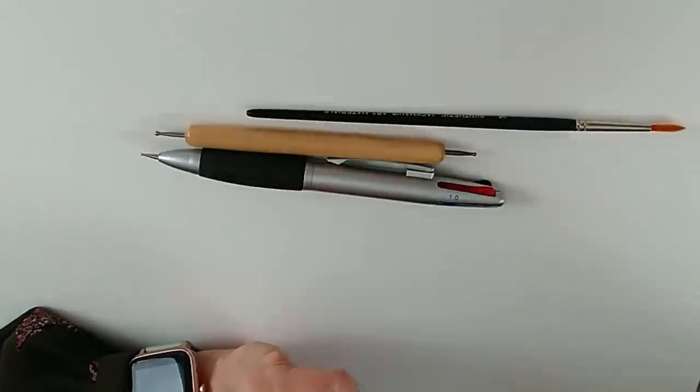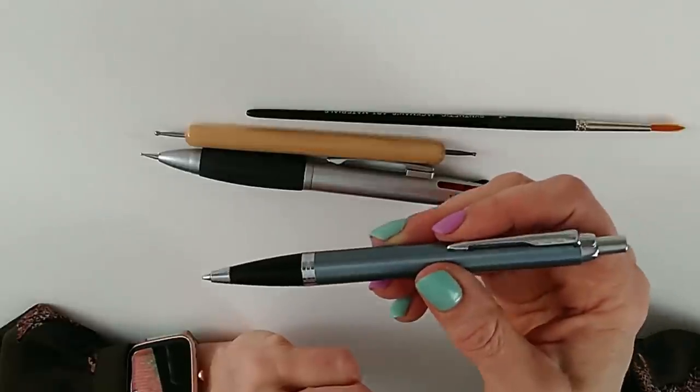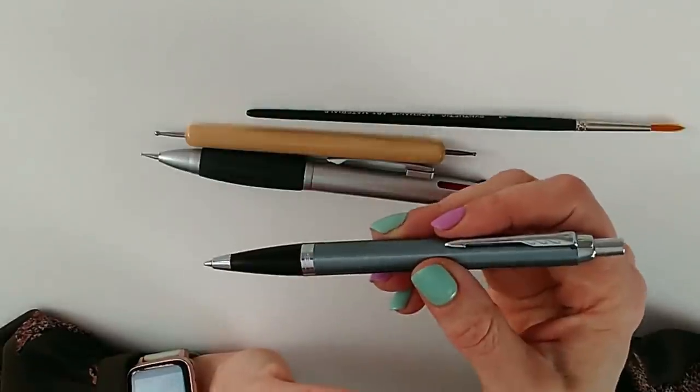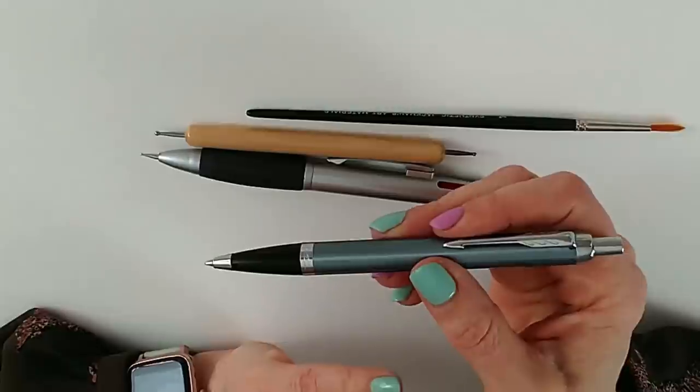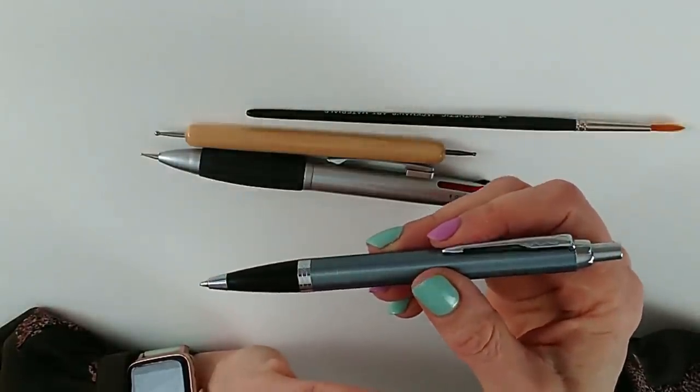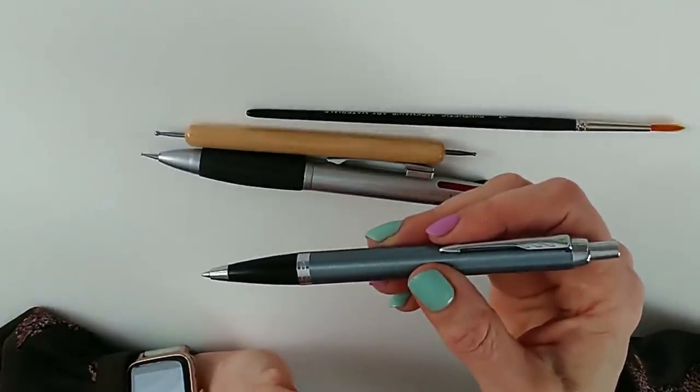Something that works really well actually is a ballpoint pen where the ink has run out. So in the UK, we call these biros. A biro is actually a brand name, but in the UK, all ballpoint pens are biros and all vacuum cleaners are hoovers regardless of who actually made them. So a ballpoint pen is a great alternative.